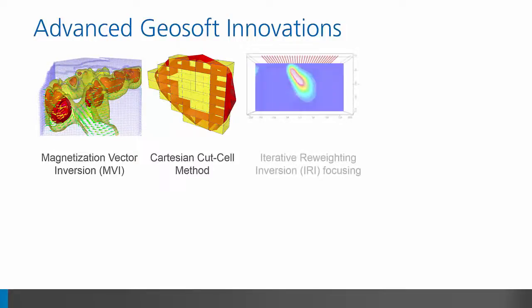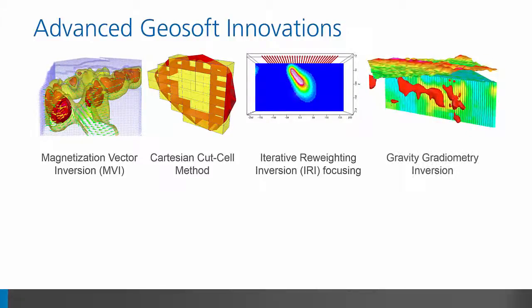Iterative reweighting is a simple method that allows you to refine the structure of your geophysical inversion with minimal effort. It results in sharper geophysical contacts and your model looks more geologically relevant. VOXI also allows for density modeling using the entire multi-channel gravity gradiometer dataset, so you don't need to combine your gravity gradiometer channels into one at the risk of losing information that was expensive to collect.